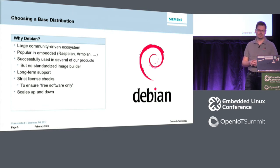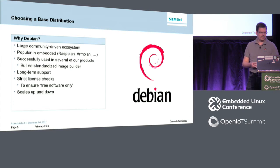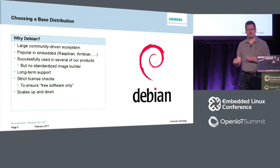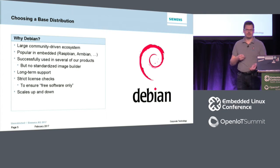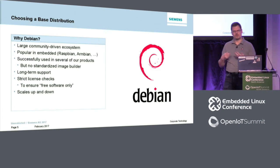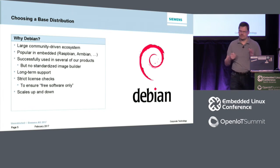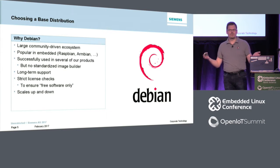Another advantage of Debian is long-term support, though other distributions have this too. Very interesting is the strict license check Debian applies — they want to ensure only real free software is included. That implies checking licenses carefully, which is valuable for us from a compliance perspective. We can build on top of well-worked-out license descriptions. And Debian scales: it can scale down to small sizes and scale up as your embedded system grows, so you grow with the packaging system.